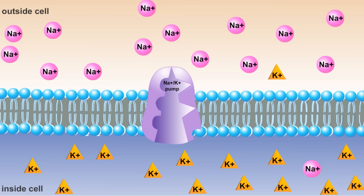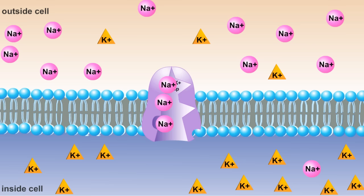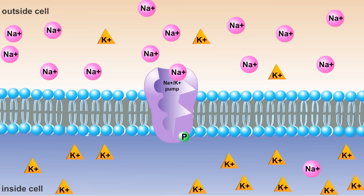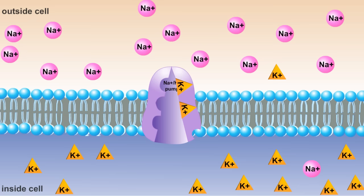The carrier then resumes its initial shape, completing the cycle. Notice that for every three sodium ions leaving the cell, two potassium ions enter.